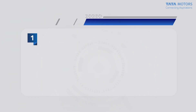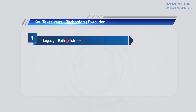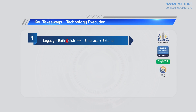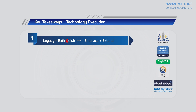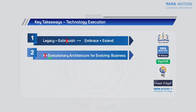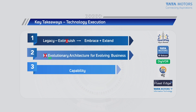Looking at key takeaways on the technology execution side: first, legacy systems — it's not about switching off an old system; it's about embracing and extending those systems in such a way that we take the wealth of knowledge and data available and provide that in the context of a digital ecosystem for our customers. Second, it's evolutionary — we don't expect a revolution in the architecture where everything just changes overnight, especially in an enterprise ecosystem. We're really looking at evolutionary architecture, evolving along with the business.